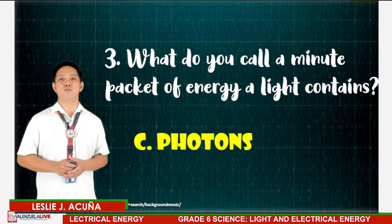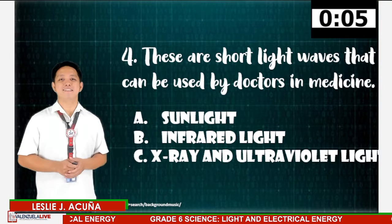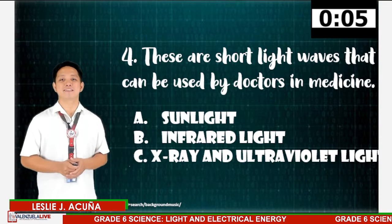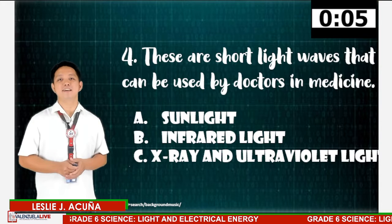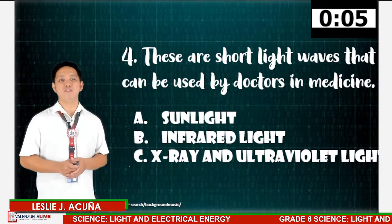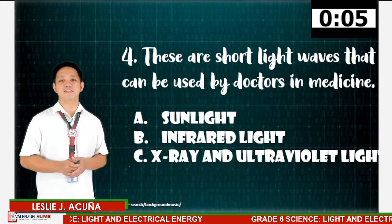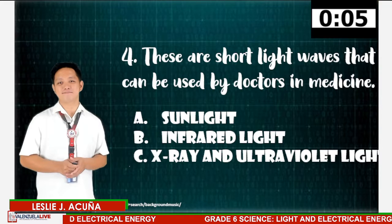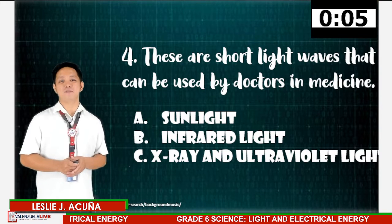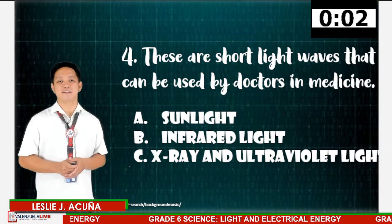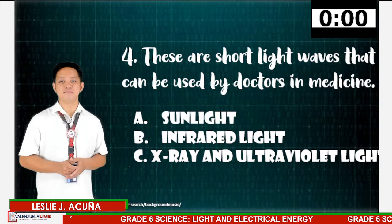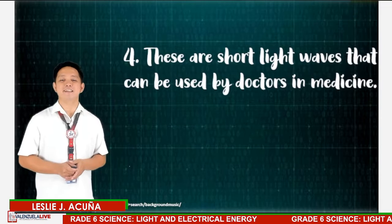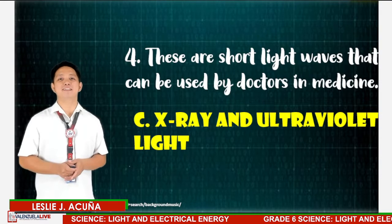Question number four: which type of light is used in medicine — A. sunlight, B. infrared light, or C. X-ray and ultraviolet light? The answer is Letter C, X-ray and ultraviolet light.